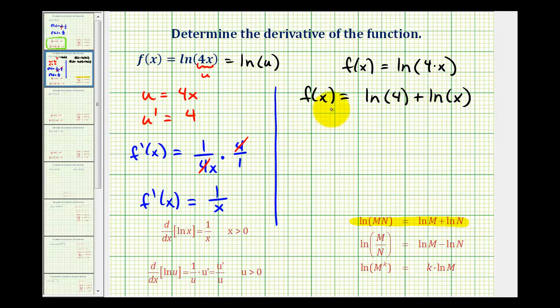And now if we take the derivative of the function in this form, we would have f prime of x is equal to the derivative of natural log 4. Well, natural log 4 is a constant, so this derivative is equal to 0 plus the derivative of natural log x, which is just 1 divided by x.